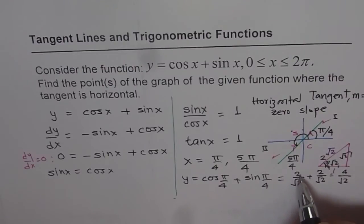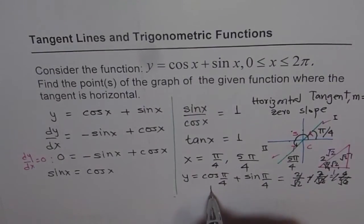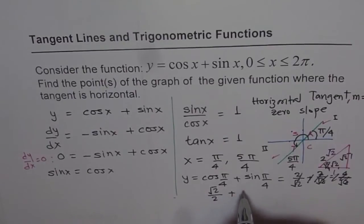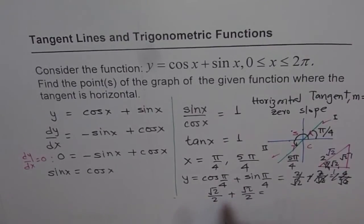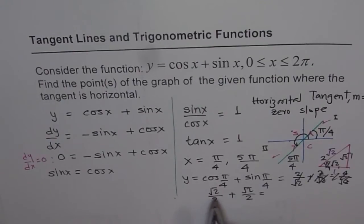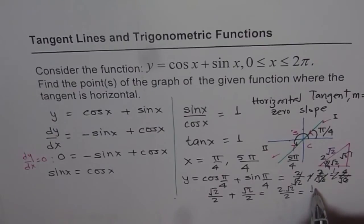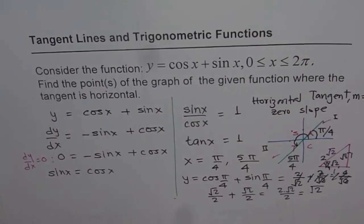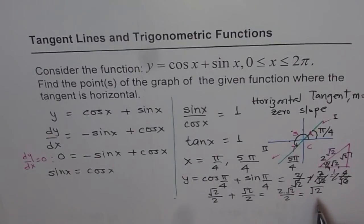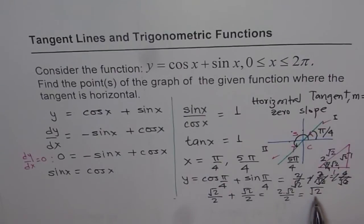Okay, sorry, I wrote it wrong. Square root 2 over 2 I have to write, but I wrote something else. So it is square root 2 over 2 plus square root 2 over 2. That means 2 square root 2 over 2 or just square root 2. We get our answer as square root 2. So one of the points is π/4, square root 2.